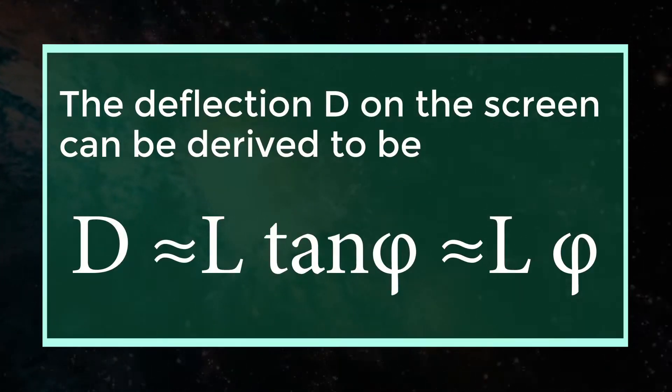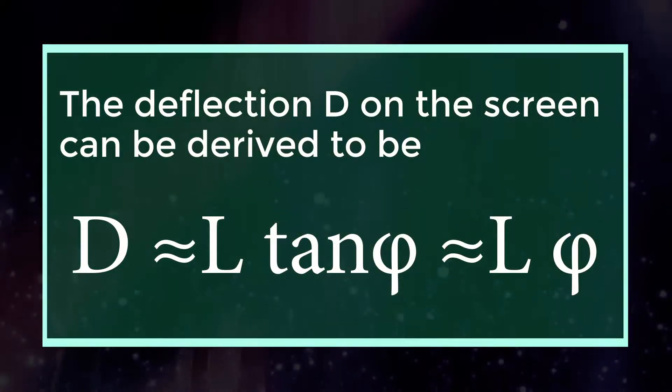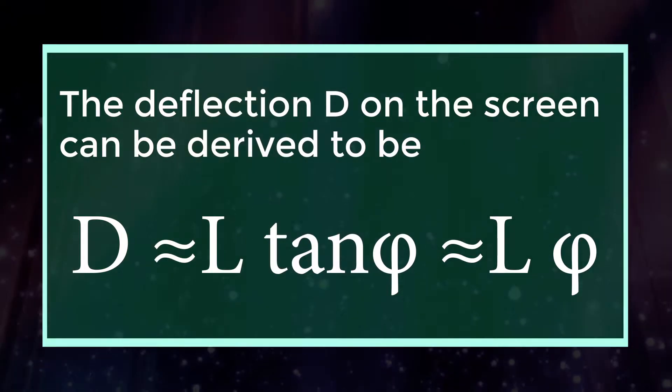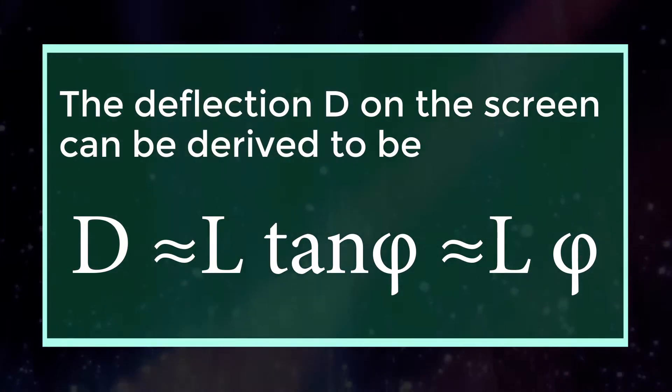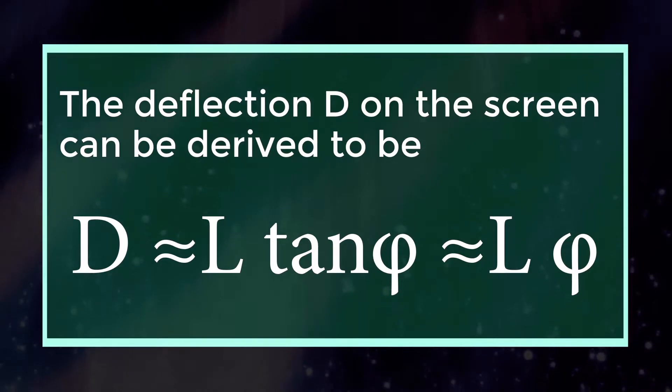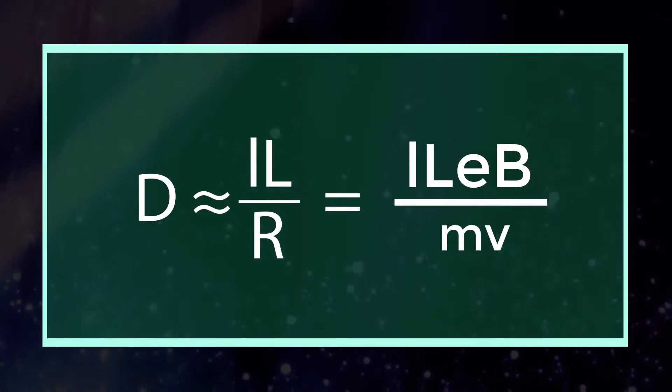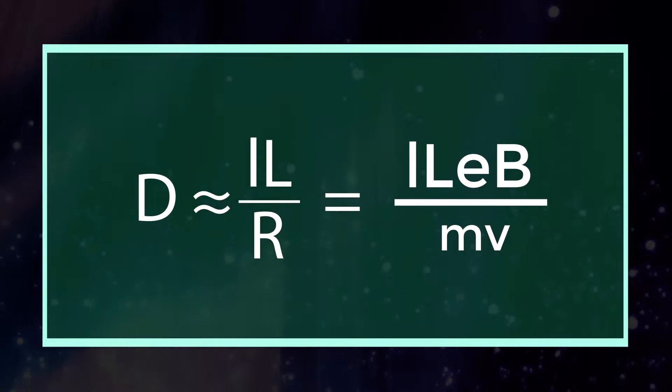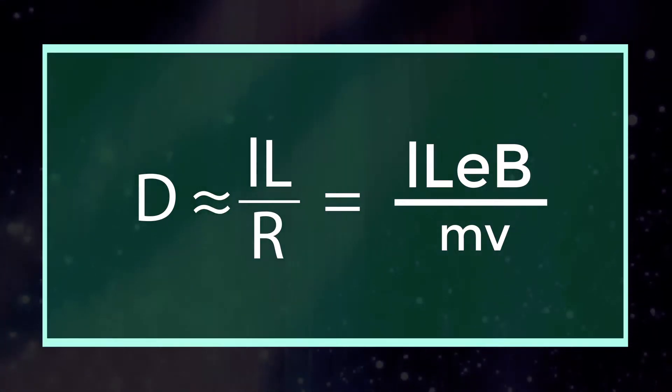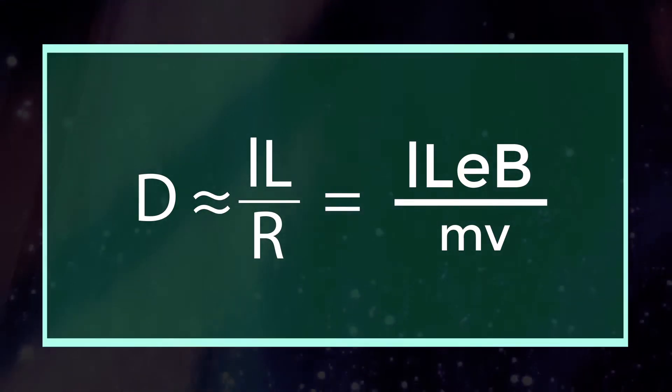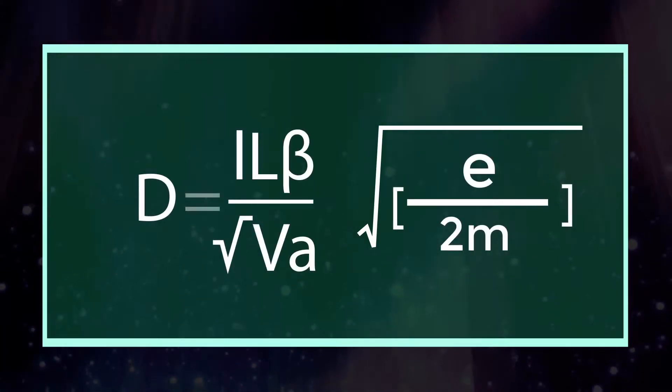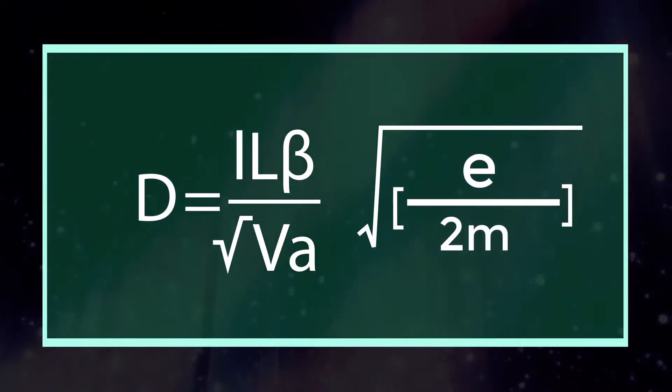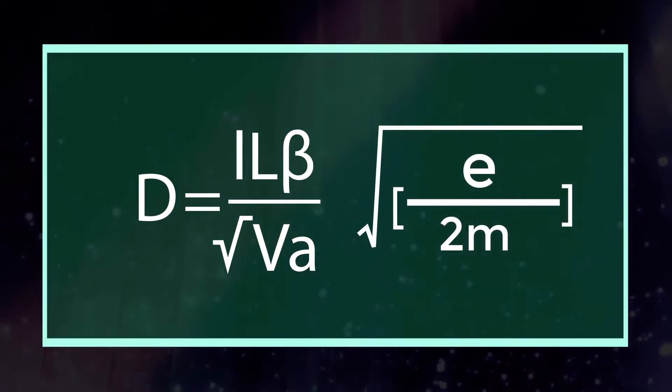The deflection D on the screen can be derived to be D ≈ L tan θ ≈ Lθ. D ≈ Lℓ by R = Lℓ eB by mv into root of e by 2m.